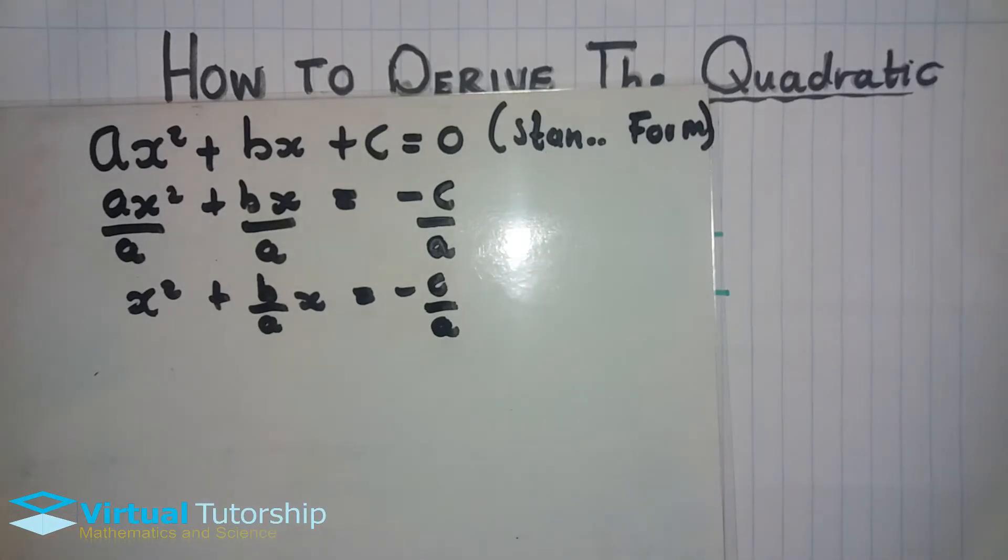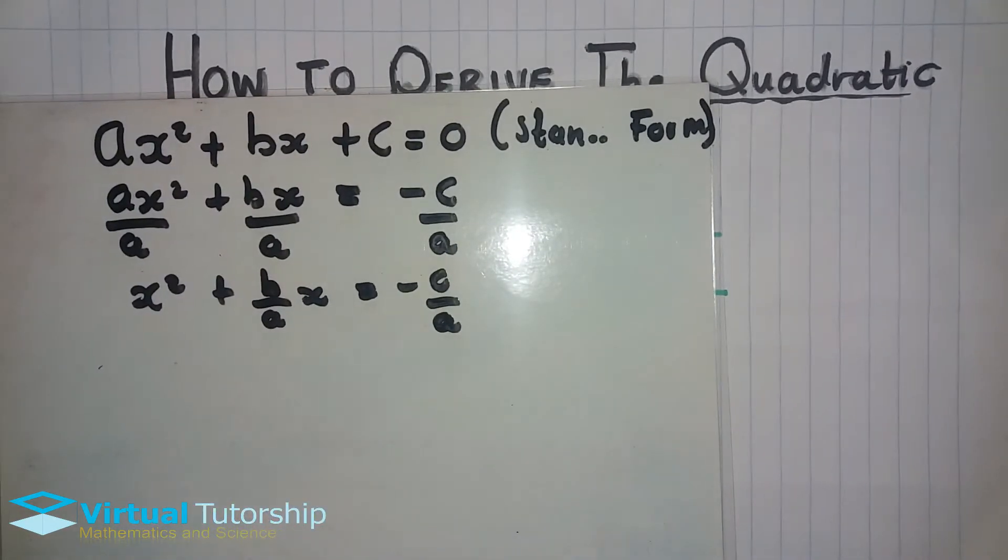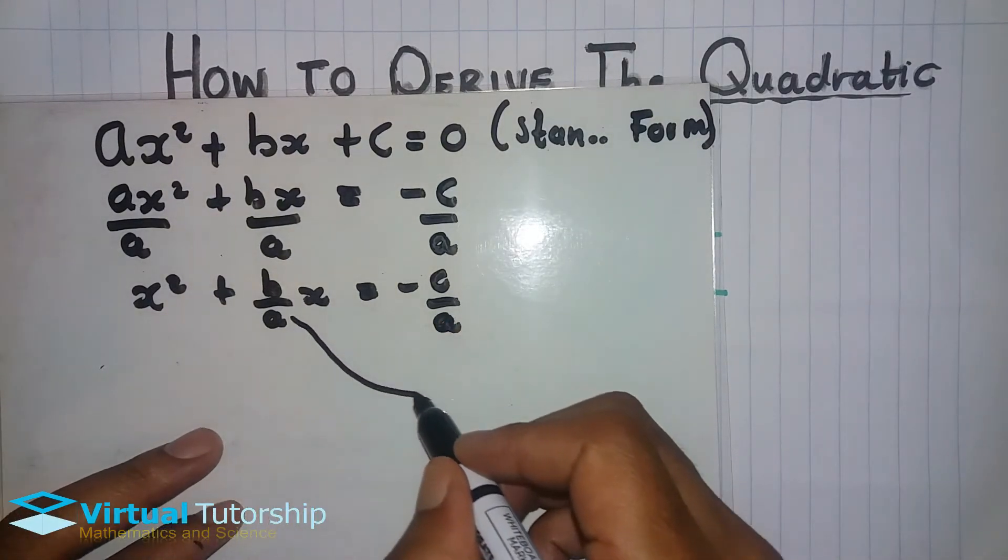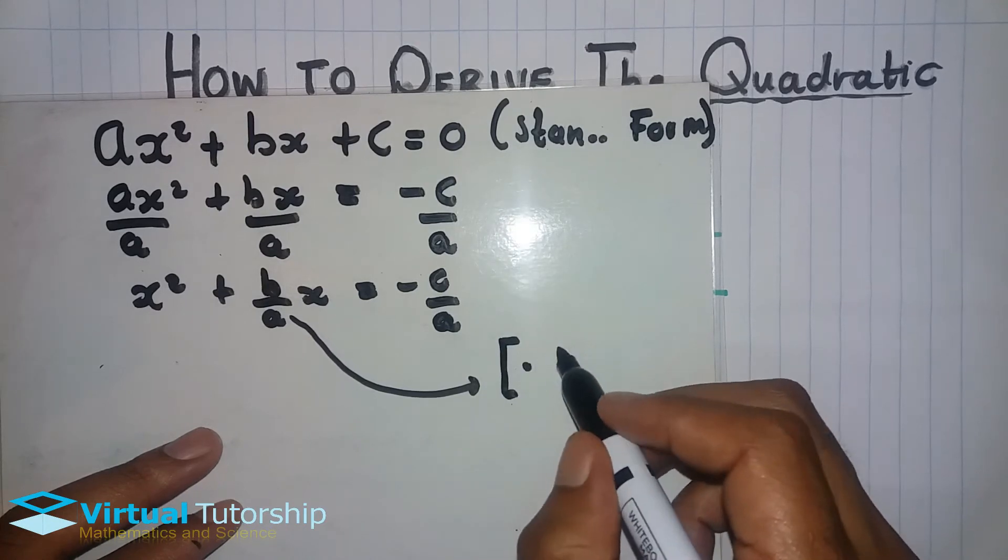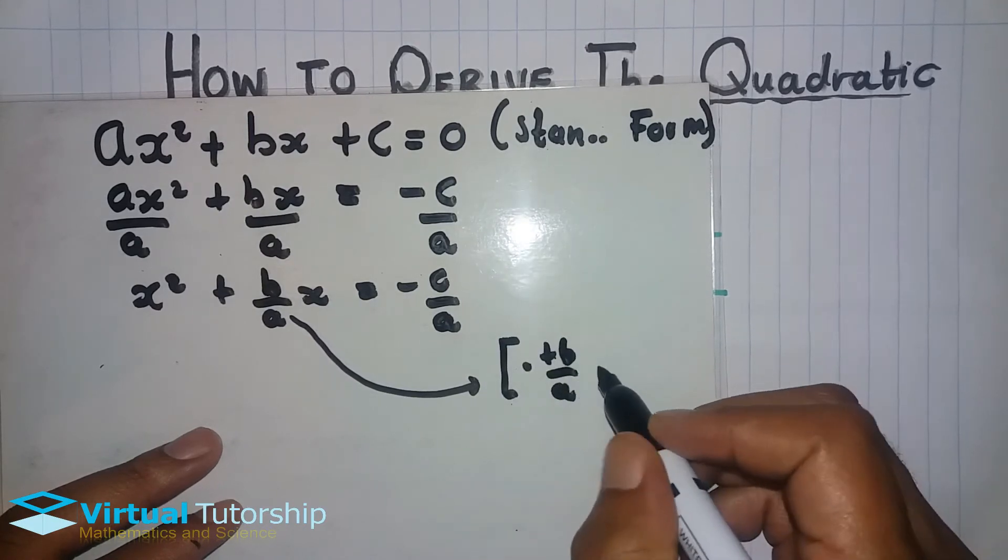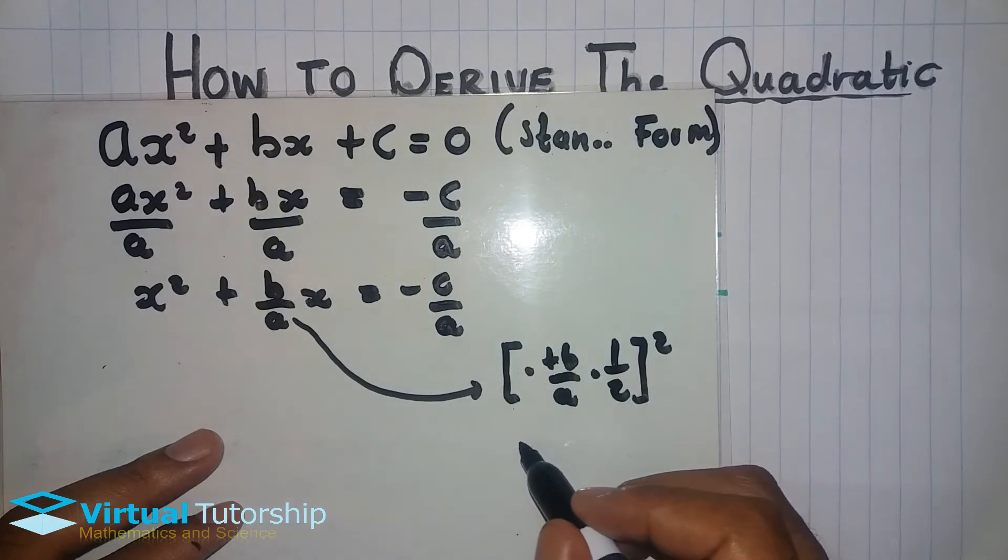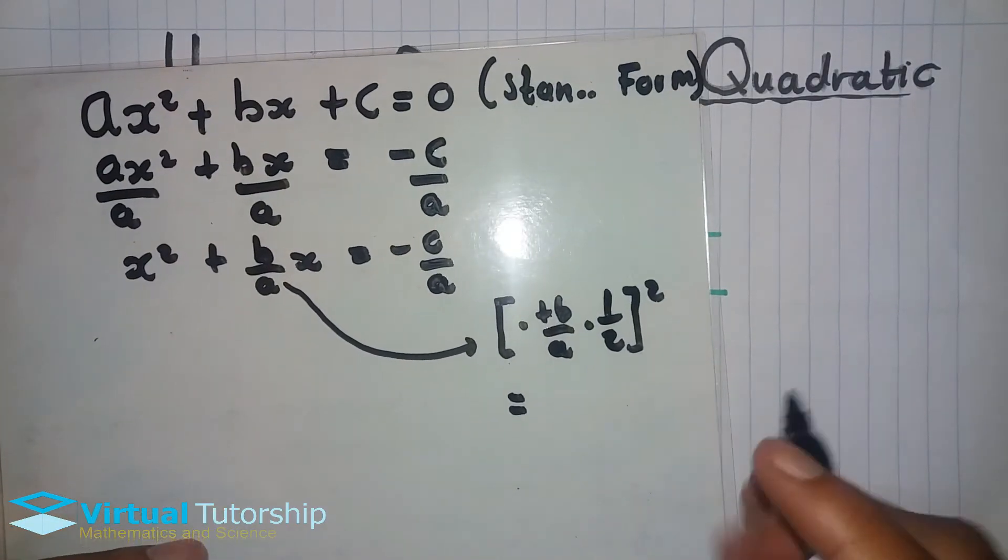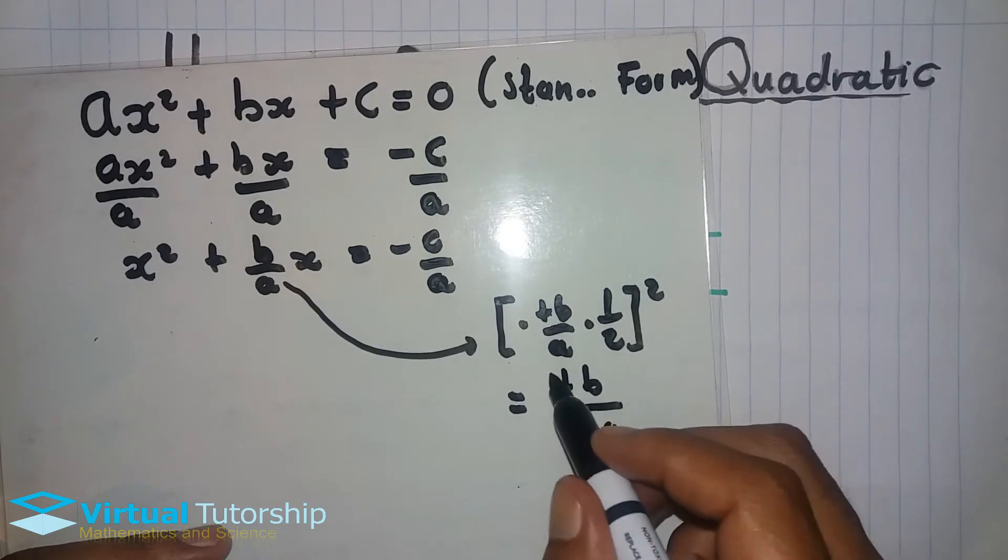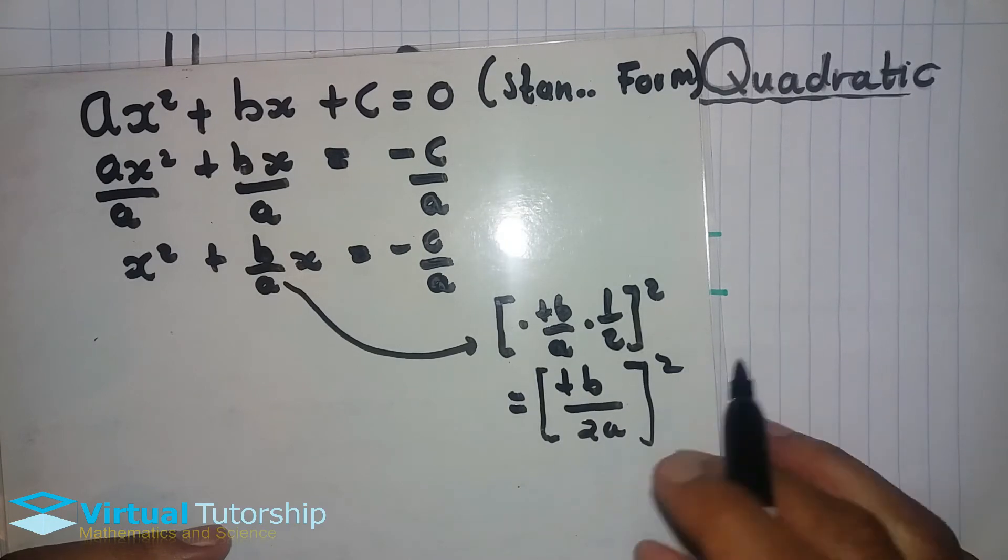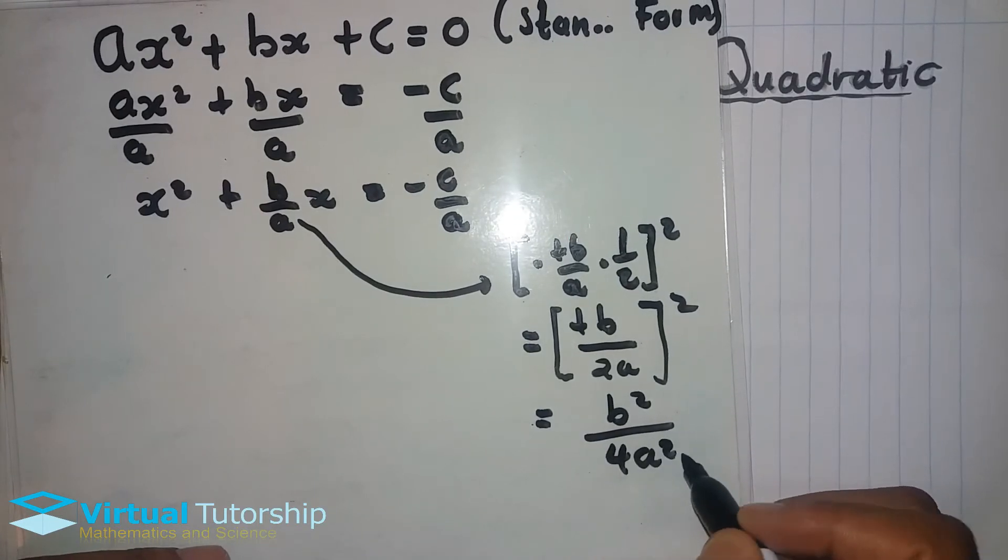The next thing we use, we take the coefficient of x and then we multiply by half and then we square. These are basic rules for completing the square. So it's (b/a) times (1/2), everything squared, equals (b/2a)² = b²/4a².